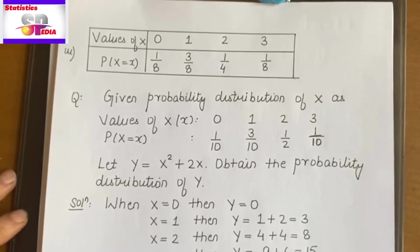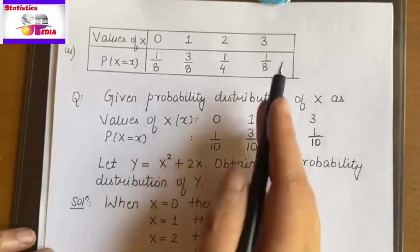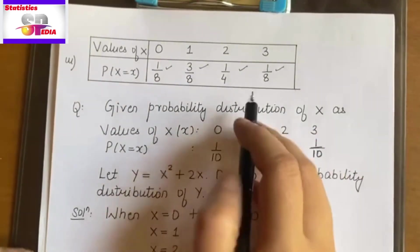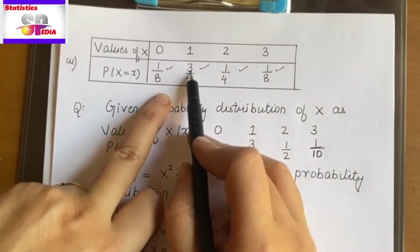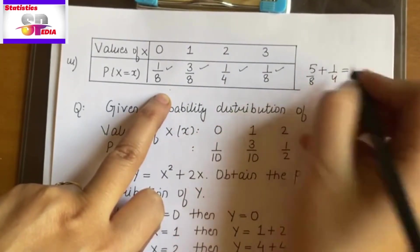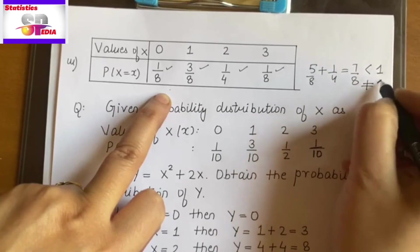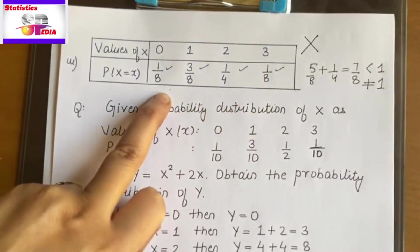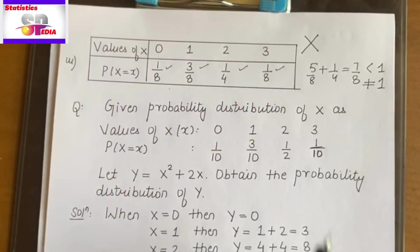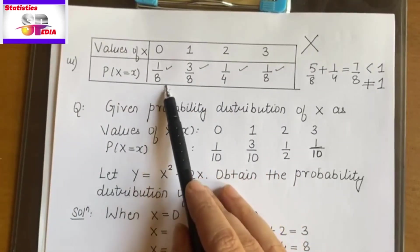Now move to the third question. First condition: all probabilities must be non-negative — yes, that is satisfied. Second condition: their sum must equal 1. Let's compute: 3/8 + 4/8 and 5/8... that gives 5/8 plus 1/4, which equals 7/8. And obviously 7/8 is less than 1 — it is not equal to 1. So this is not a probability mass function. To summarize: to verify a PMF, probabilities must be non-negative and their sum must equal 1.